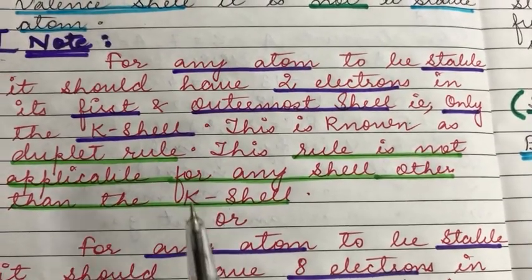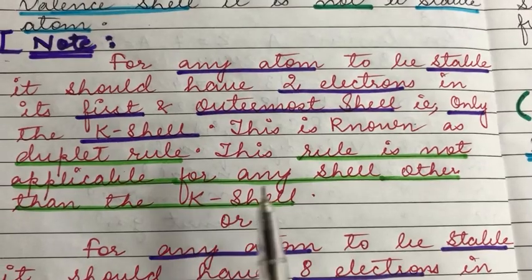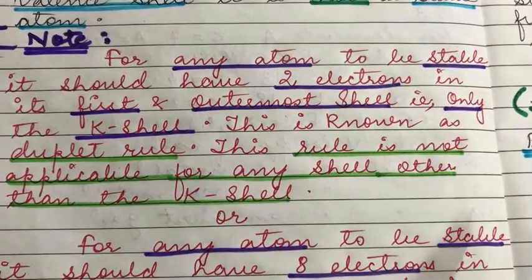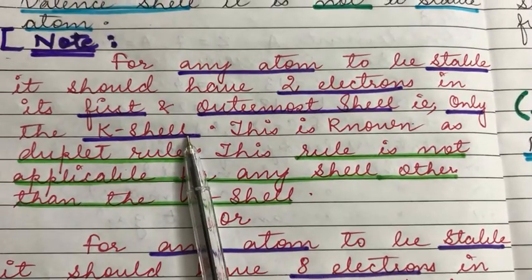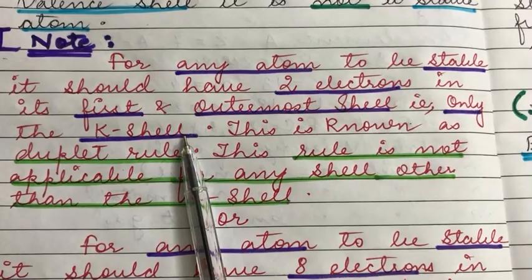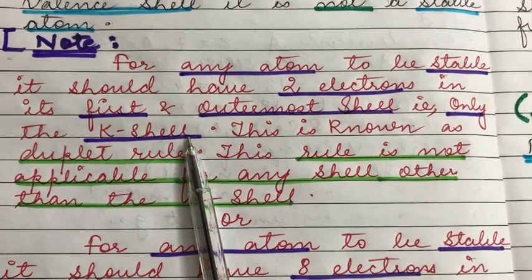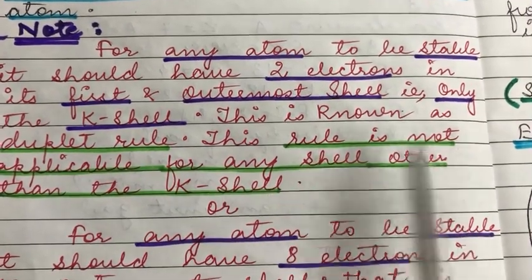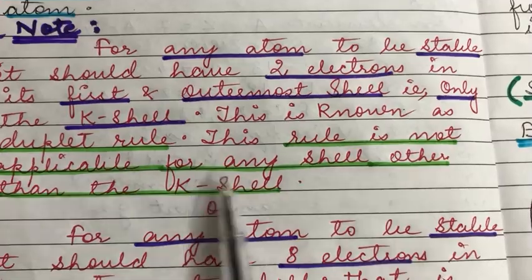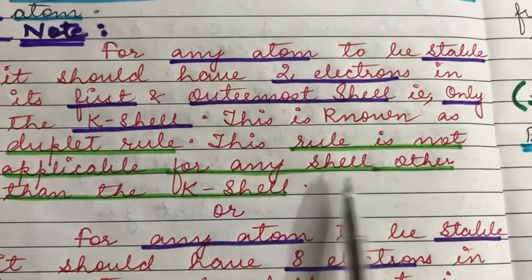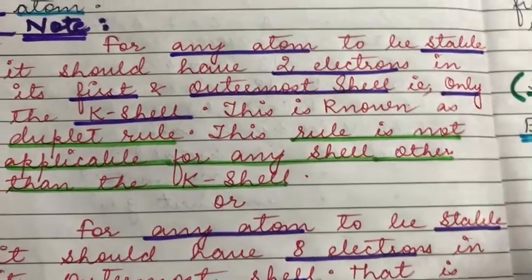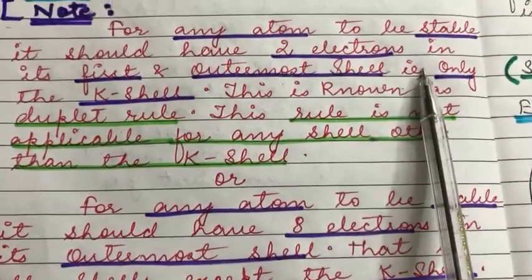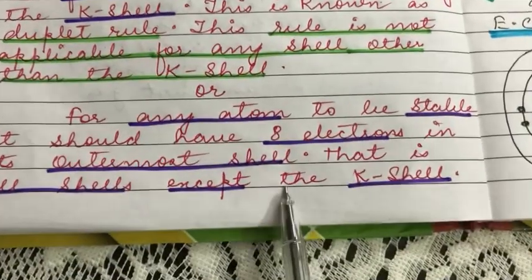If the atom has two electrons in any other shell apart from the K shell, then it is not said to follow the duplet rule. Therefore, this rule is not applicable for any shell other than the K shell. This is one of the rules of stability.